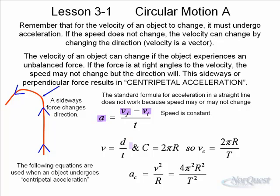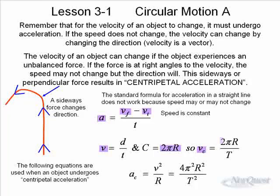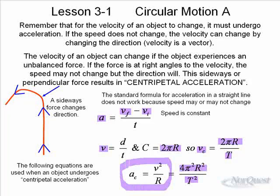If the direction changes, we can combine our basic definition of velocity — distance over time — with the circumference of a circle, which is 2πr. If the velocity of an object is the time it takes to complete one full circumference, we can derive that the acceleration equals either 4π²r over T², or v² over r. This is our standard equation for centripetal acceleration.